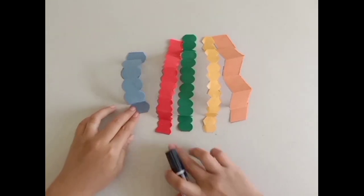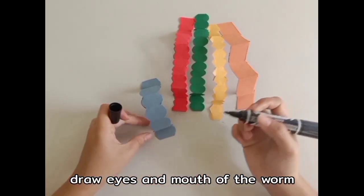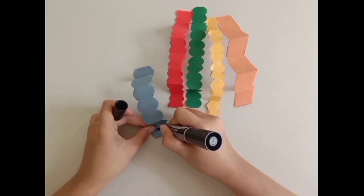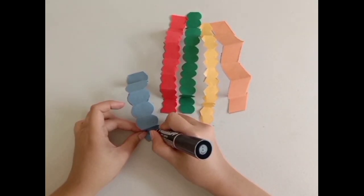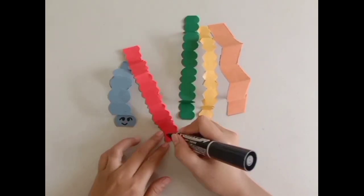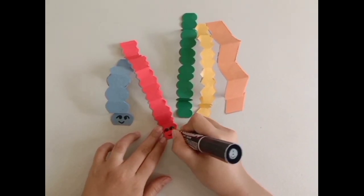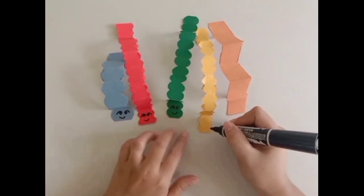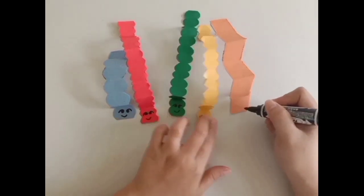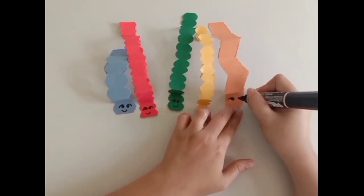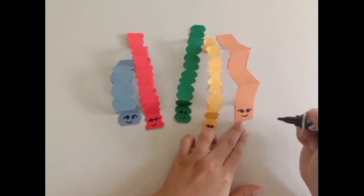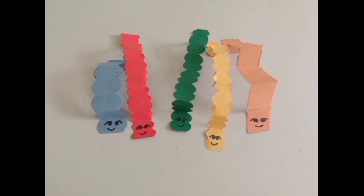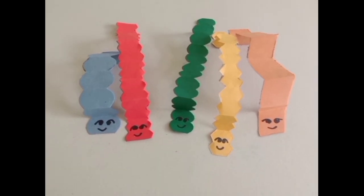To finish off, use a marker to draw the eyes and mouth of the worm. If you are in a decorative mood, use crayons or colorful markers or stickers to make unique wiggly worms.